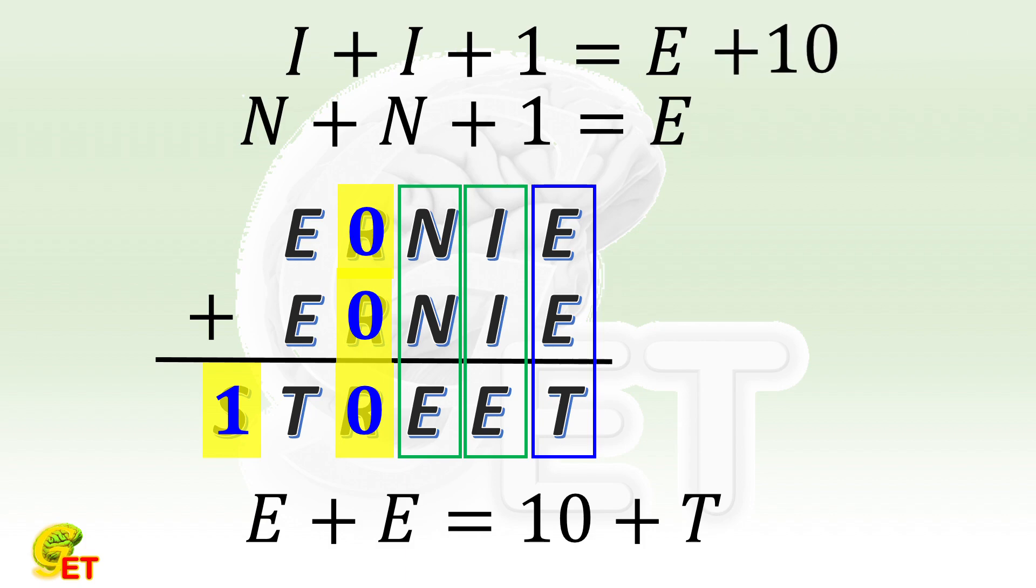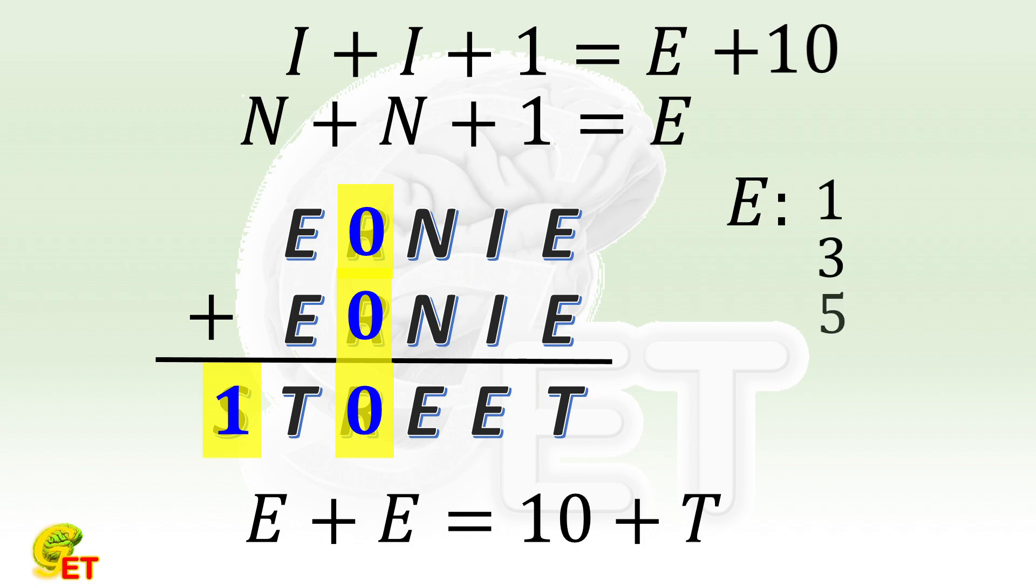E is odd, so now we list all the odd digits and try them one by one. Since S is equal to 1, E cannot be equal to 1.